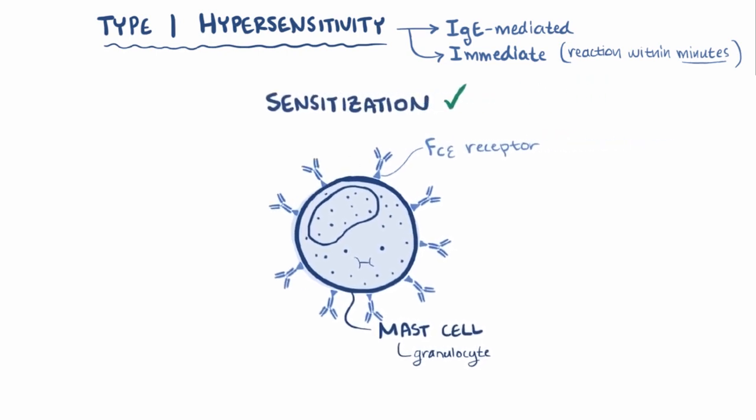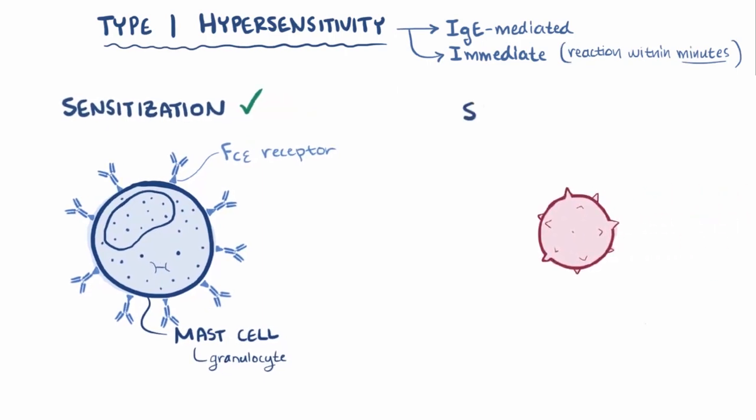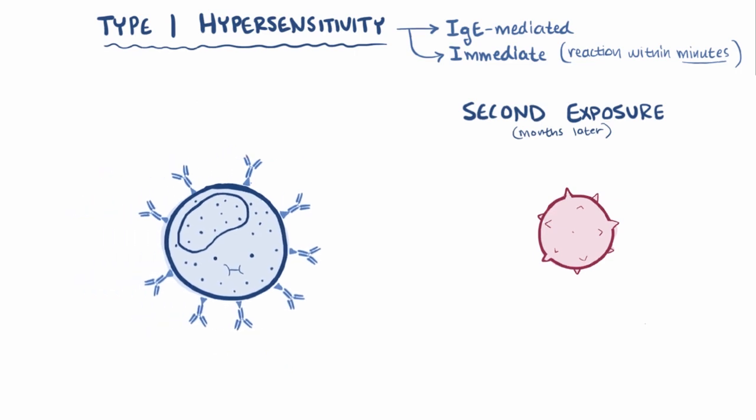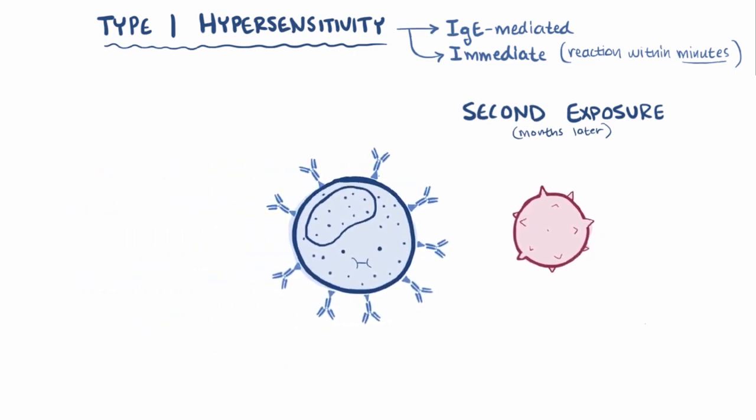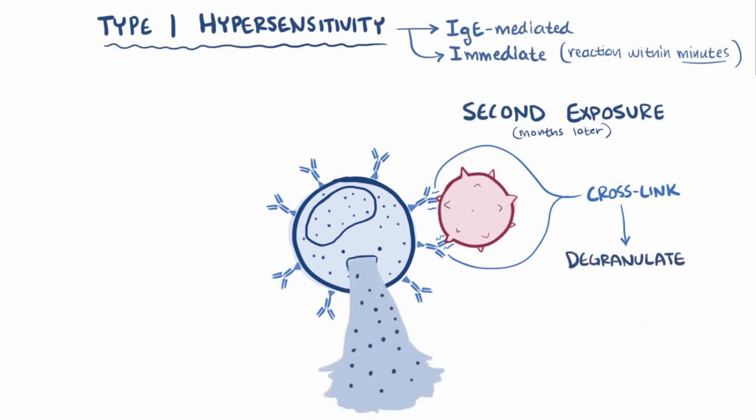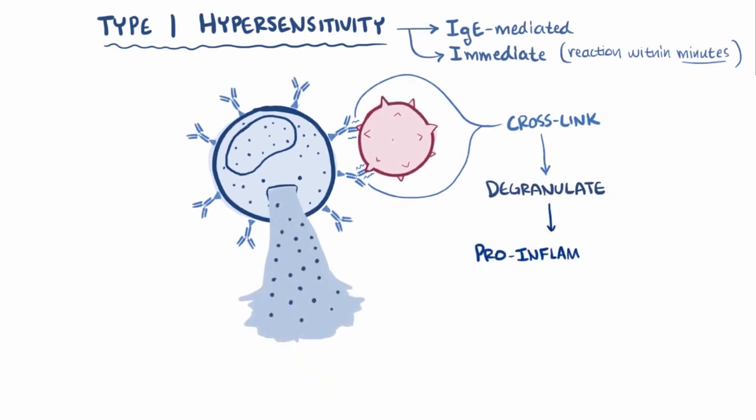Now let's say that that same person breathes in some ragweed pollen again, maybe a few months later, a second exposure. Well, the souped-up mast cells, using their coat of antibodies, bind to the antigen. Actually, it takes two or more bound antigens to cross-link the IgE antibodies, which signals the mast cell to degranulate and release a bunch of pro-inflammatory molecules called mediators that ultimately cause the effects seen in an allergic reaction.